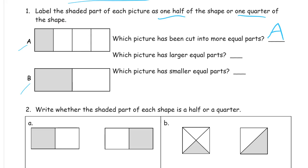Which picture has larger equal parts? B's equal parts are way larger than the ones in A. So B has larger parts. And which picture has smaller parts? Well, B's are larger and A's are smaller.